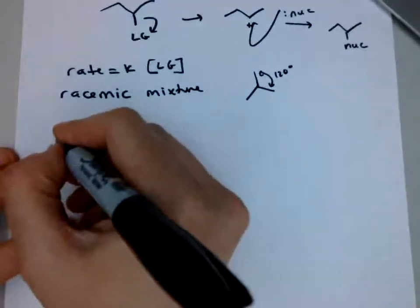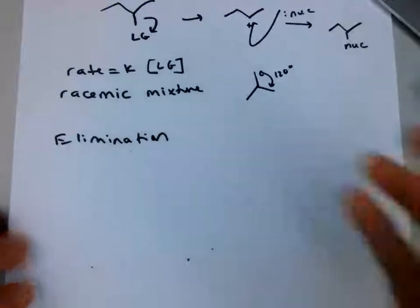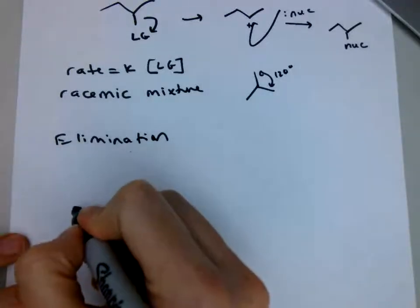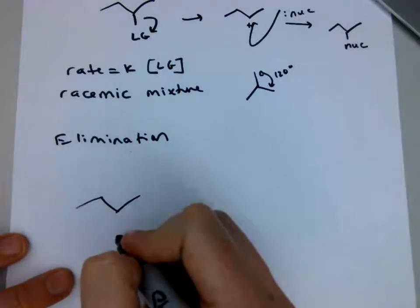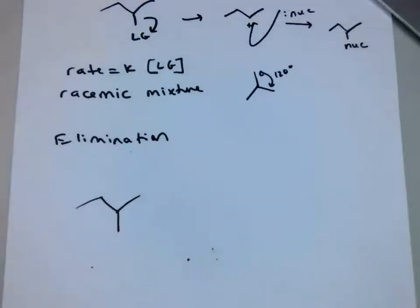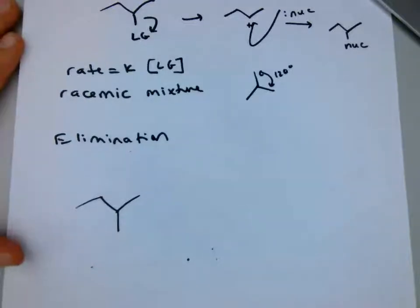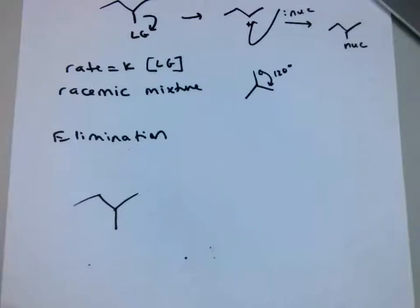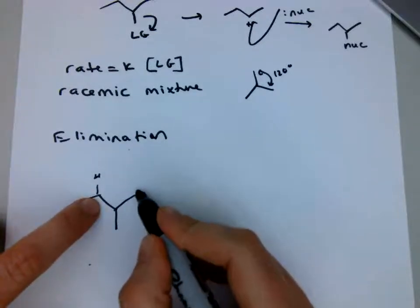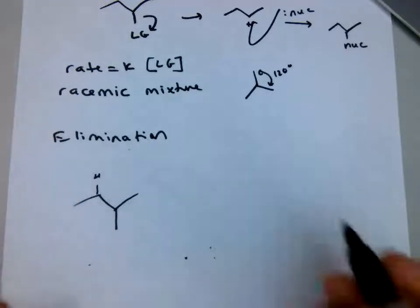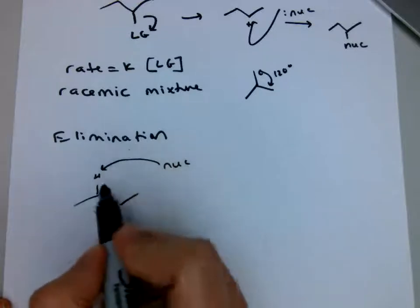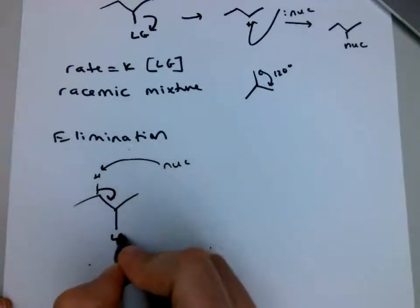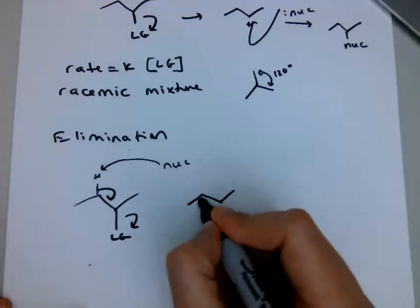So the other type is the elimination reaction. So elimination reactions will form a double bond. They're eliminating something. And there's two types of elimination reactions. So one will happen all in one step. And the other will happen in two steps. So for the elimination reaction, you actually need a hydrogen on the adjacent carbon. It could be this hydrogen or the hydrogen on this carbon. We'll talk about that and which one it'll pick later on. So your nucleophile will come and take that hydrogen. The electrons from this bond will move here. And then your leaving group will leave. And you'll end up with a double bond.